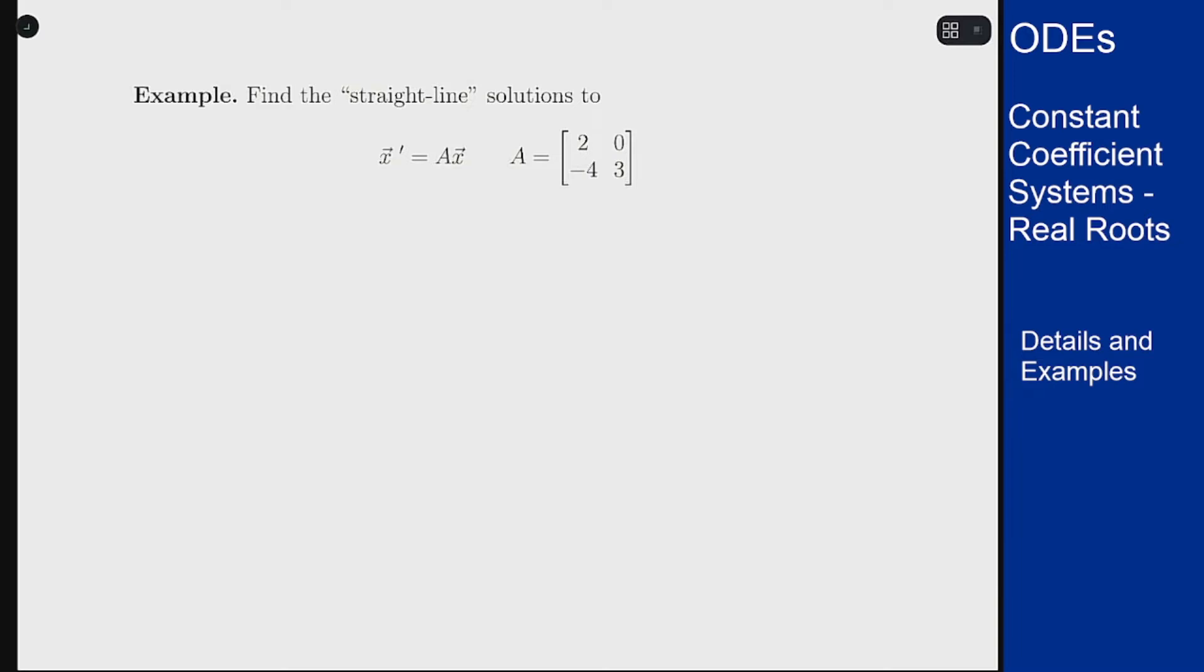In this example we want to find the straight-line solutions to the system vector x prime equals A times x, with A being the matrix 2, 0, minus 4, 3.